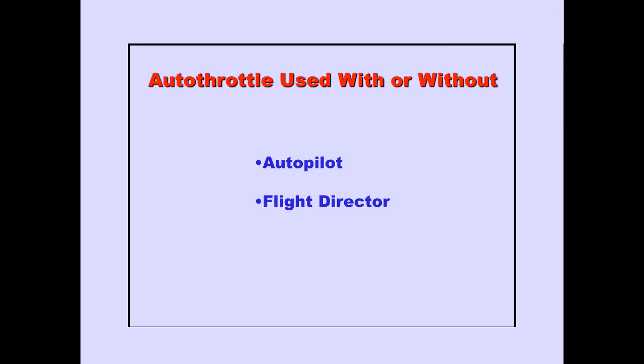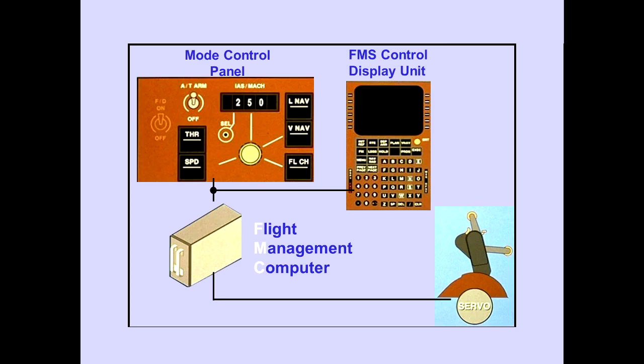The autothrottle can be used with or without the autopilot and with or without the flight director. The mode control panel and the FMS-CDU provide inputs to the flight management computer. The FMC sends signals to the servo motor, which moves the thrust levers. The flight management computer will be discussed in the FMS module.